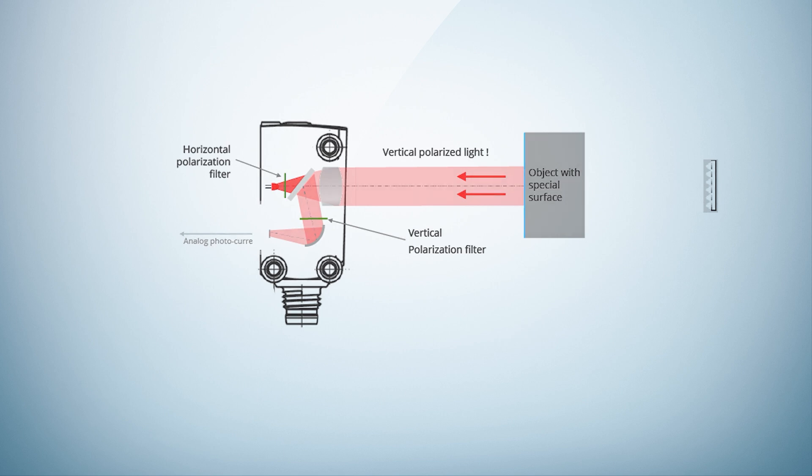Now SSR comes into play. SSR means that it is not only recorded whether and how much light is returned, but also how the light spot is distributed on a multipixel receiver element. This is spot size recognition.